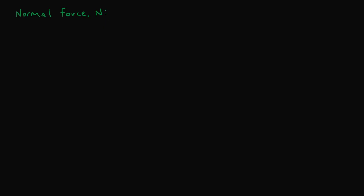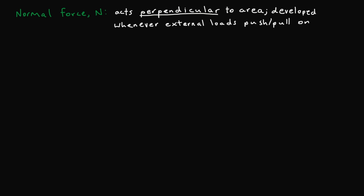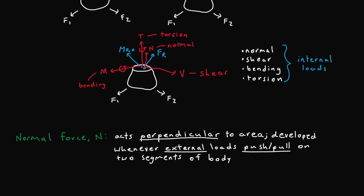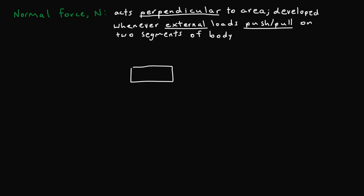Now revisiting normal force: a normal force acts perpendicular to the cross-sectional area of a body, or normal to the cross-sectional area, and is developed whenever external loads push or pull on two segments of a body — key words: push and pull. To visualize this, if we have a solid and apply a pair of axial forces, then make a cut down the center, taking a look at the right side of the cut, we shall expect to see a generated normal force N opposing the external force.